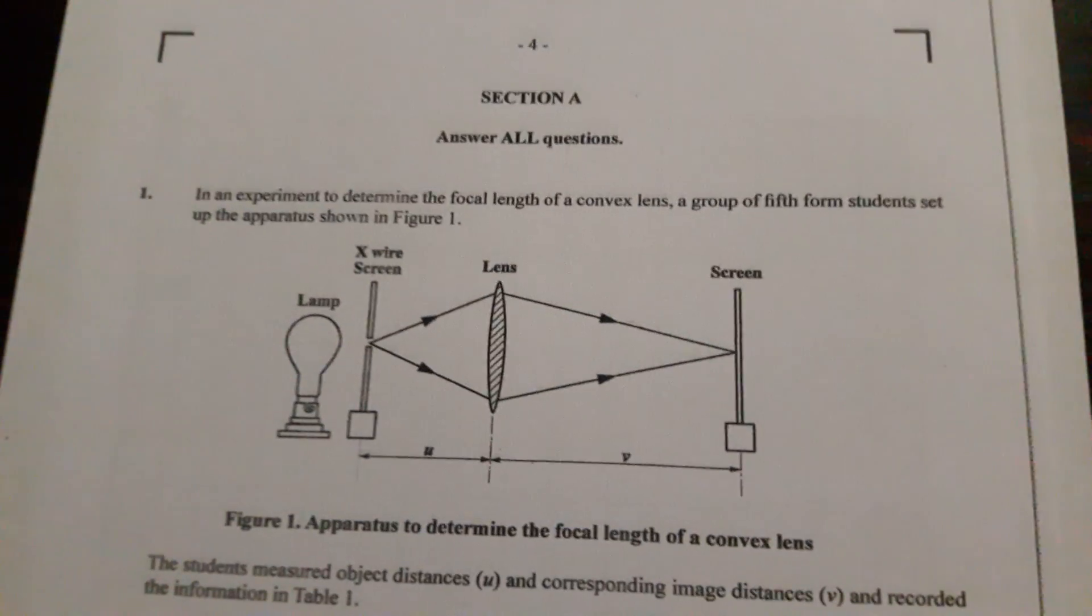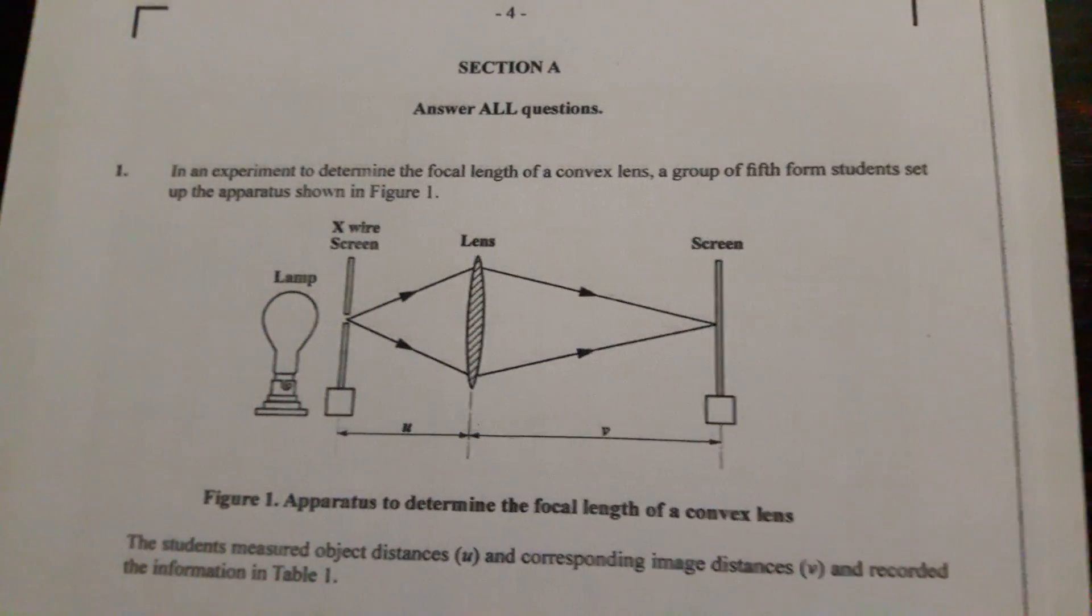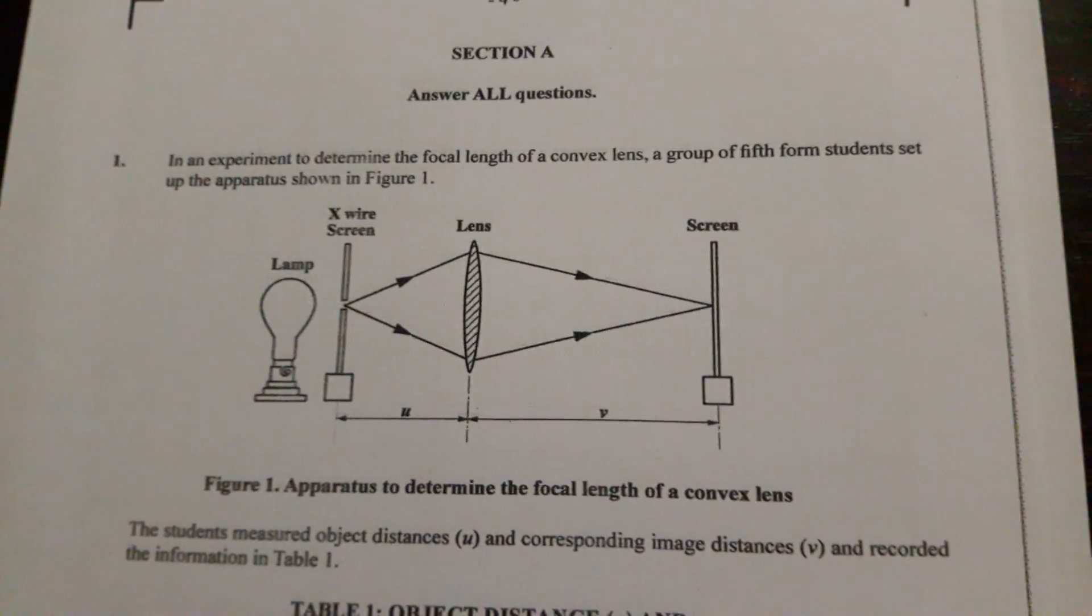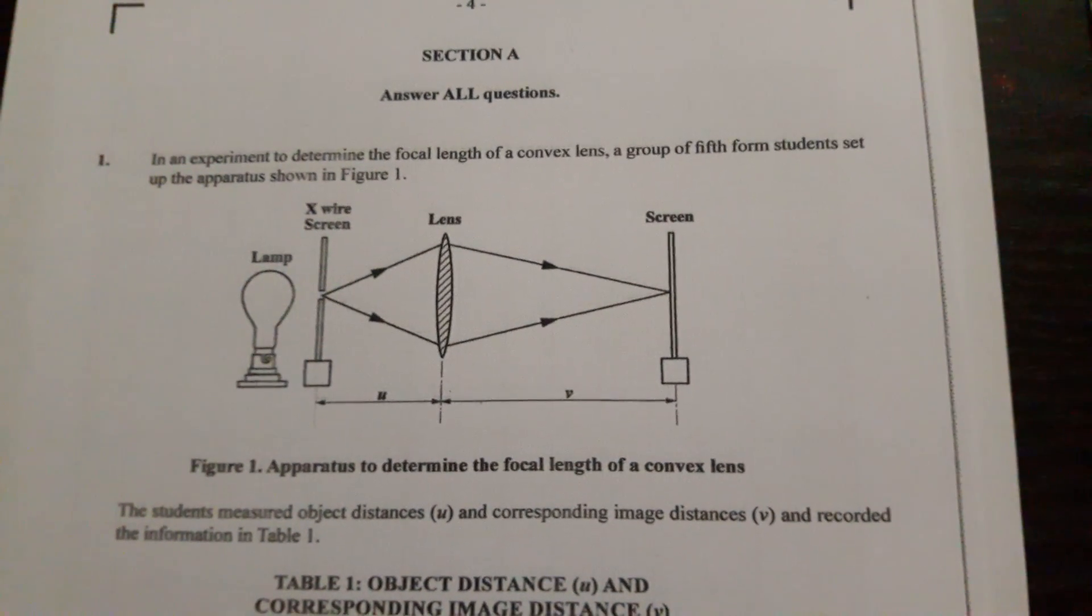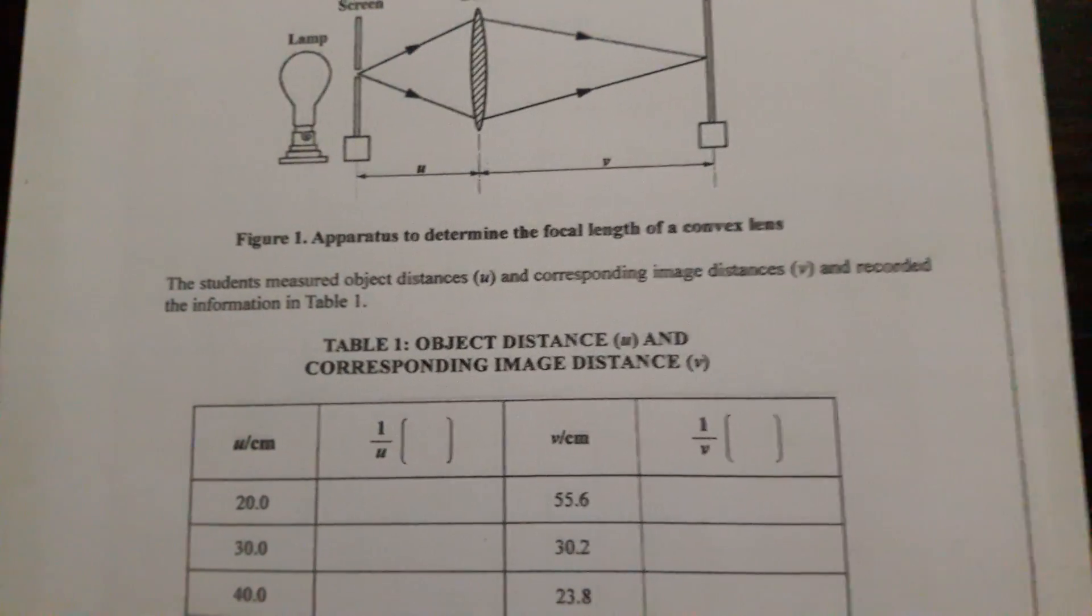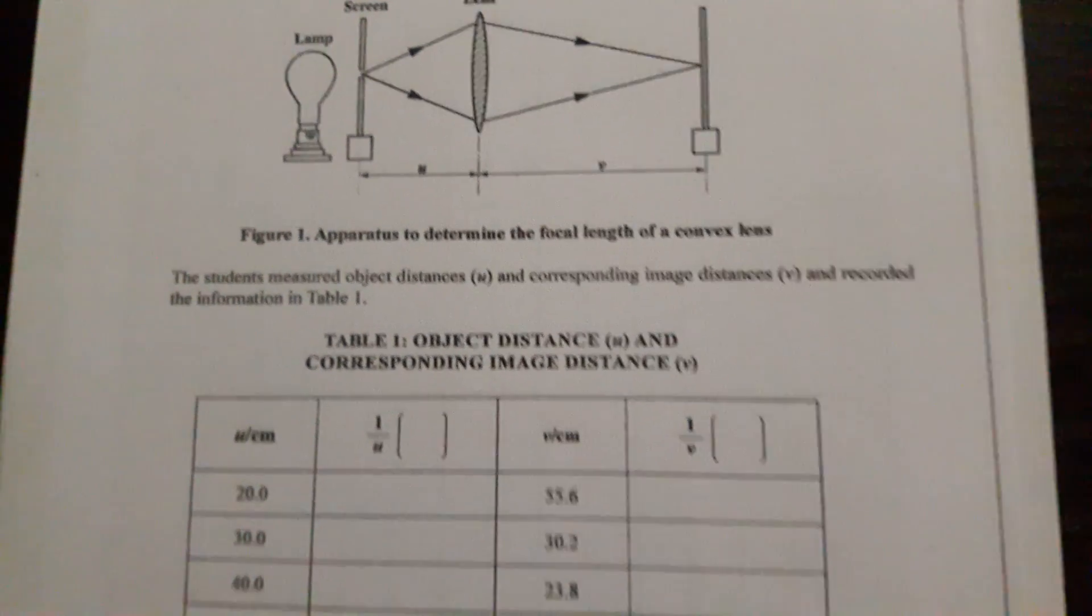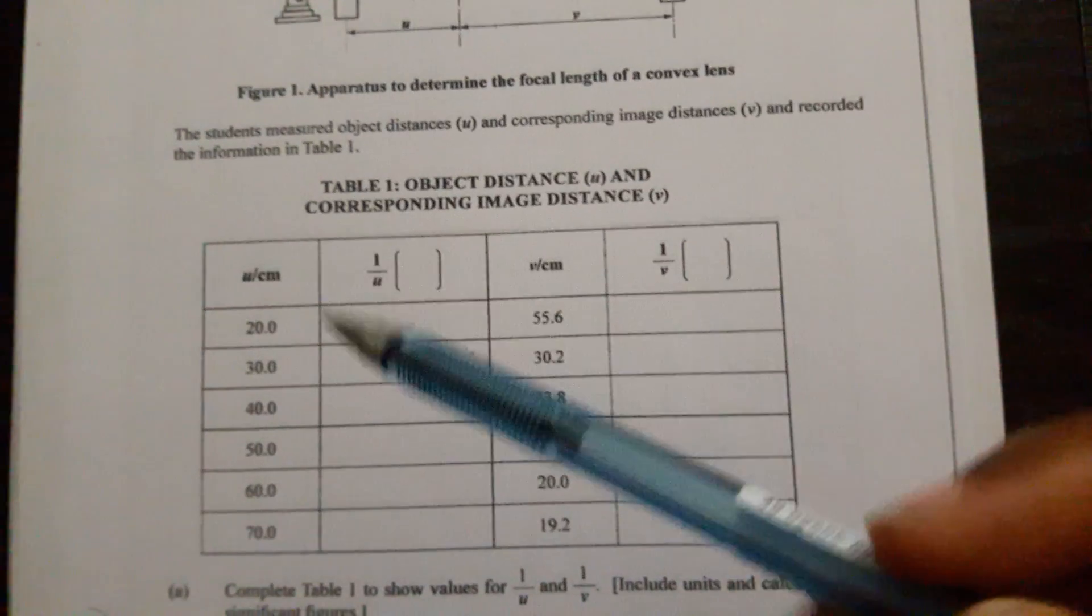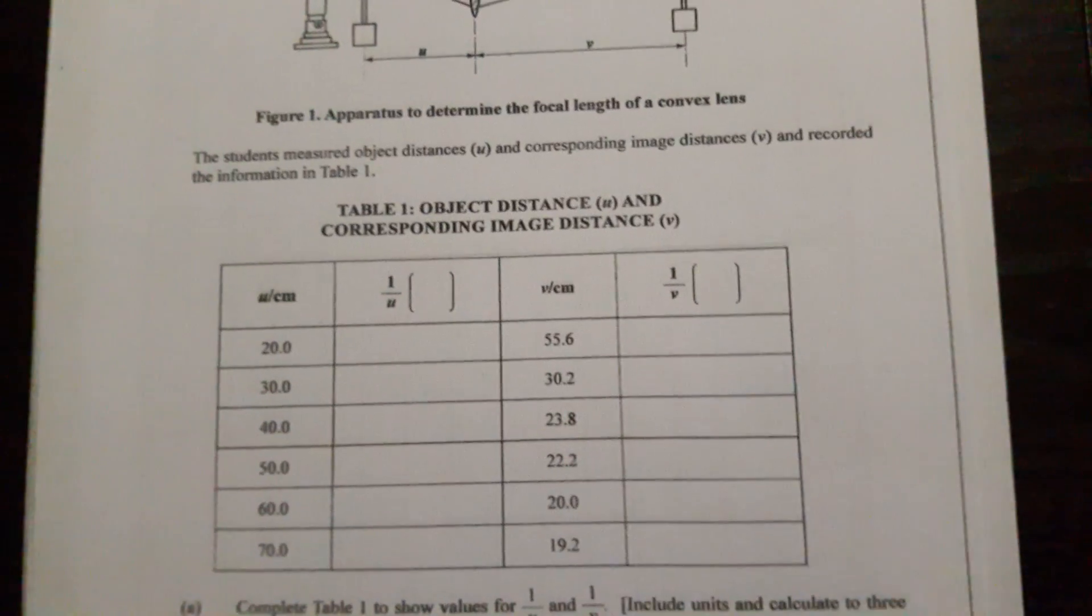Okay, so here is the last question. I have 17 minutes on this. This is June 2018 paper 2, question 1. An experiment to determine the focal length of a convex lens. A group of fifth form students set up the apparatus shown in Figure 1. The students measured object distances u and corresponding image distances v and recorded the information in the table. This is what I recorded. 20.35. This is the set they were looking at.